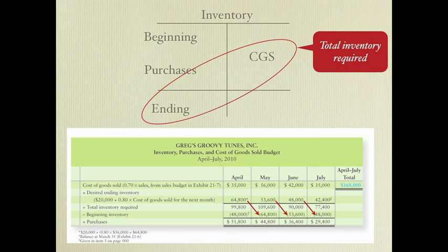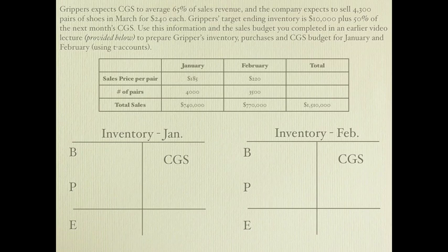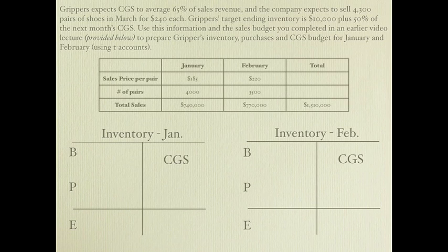Let's look at an example. Grippers expects cost of goods sold to average 65 percent of sales revenue, and the company expects to sell 4,300 pairs of shoes in March for $240 each. I have the sales budget we created in the prior lecture. Grippers' target ending inventory is $10,000 plus 50 percent of the next month's cost of goods sold. We'll prepare Grippers' inventory purchases and cost of goods sold budget for January and February using T-accounts.